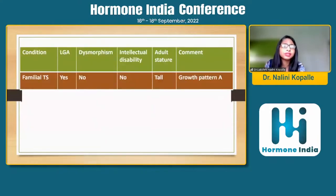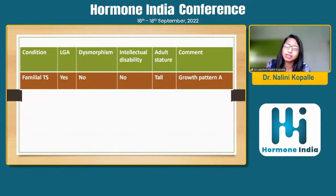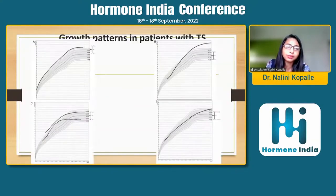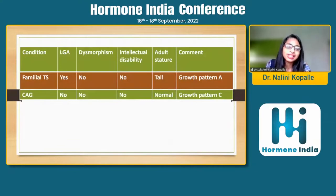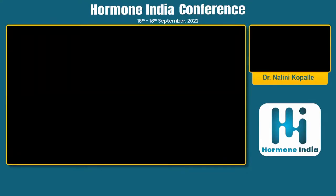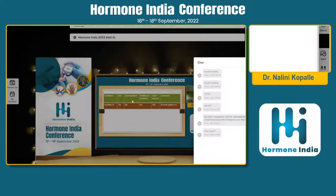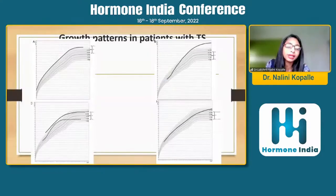Familial tall stature follows pattern A: the child has always been tall, large for gestational age, no dysmorphisms, no intellectual disabilities, and adult stature is also tall — everyone in the family is tall. Constitutional advancement of growth (CAG) shows pattern C: no LGA, no dysmorphism, no intellectual disability, normal ultimate adult stature. There is a sudden growth spurt happening a little faster than peers and then normalizing. Obesity also follows pattern C: no LGA, no dysmorphism, a huge environmental role, and adult stature is usually normal because you cannot beat your genetic potential — rapid growth velocity occurs at a certain phase due to excess nutrients available.